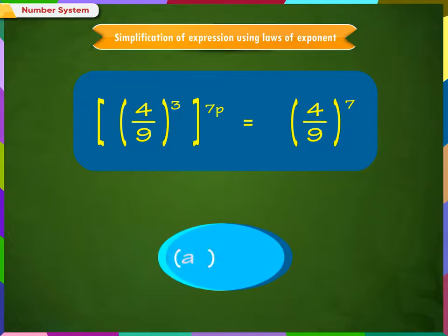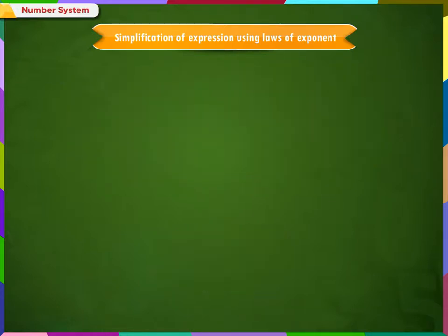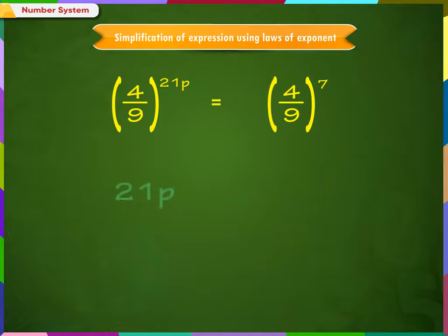Using the law of exponent, a to the power of m to the power of n is equal to a to the power of mn. We get 4 by 9 raised to 21p equal to 4 by 9 raised to 7. Since the bases are same on both sides of equal to sign, so they cancel out and thus 21p is equal to 7. So, p is equal to 1 by 3.